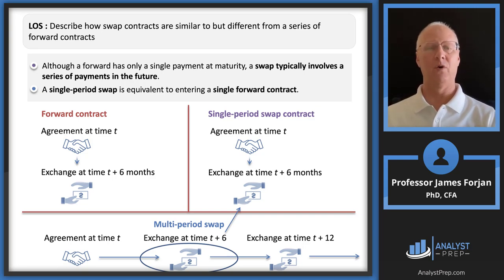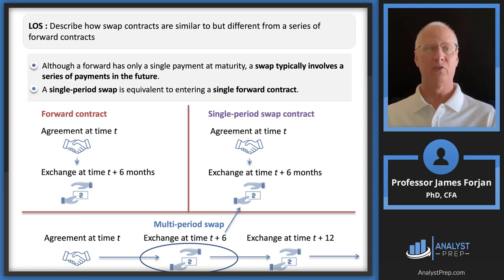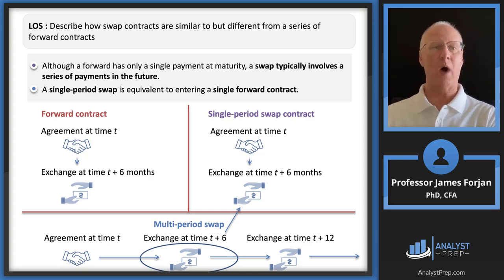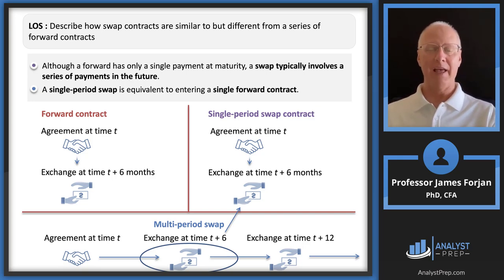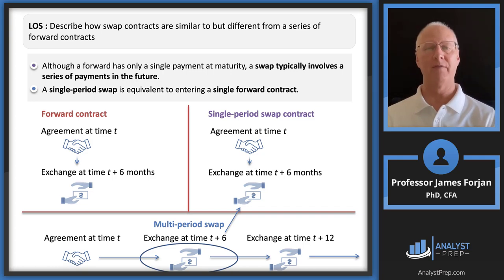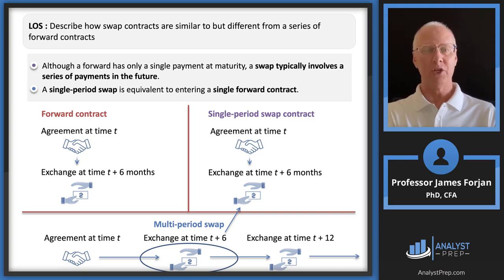Skip down to the multi-period swap — this is where things get very interesting. When you hear the term swap contracts, we're almost always referring to a multi-period swap. So we might sign a five-year swap — that's known as the tenor of the swap — and we'll exchange cash flows every six months, so there are 10 swapping dates over a five-year period. We shake hands and agree at time period T, which is today. Then in six months we exchange cash flows, then in 12 months, then in 18 months, all the way out to five years.